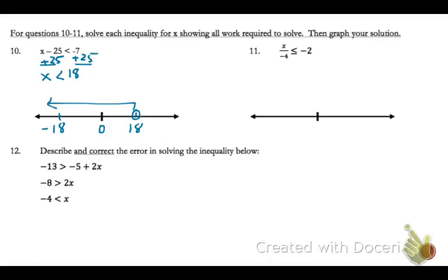On number 11, x is being divided by negative 4. So to do the opposite, I'm going to multiply both sides by negative 4. When I multiply or divide by a negative, I need to reverse my inequalities. So now this will become greater than or equal to.